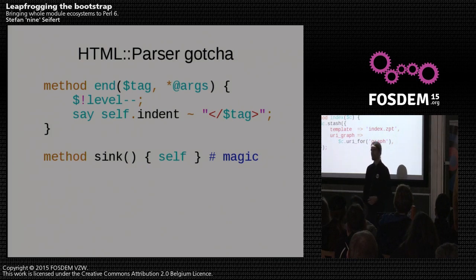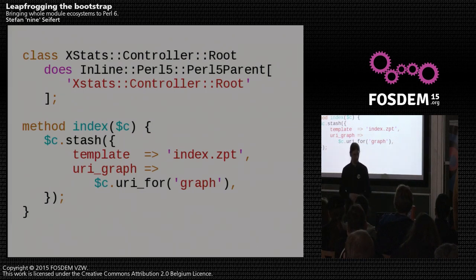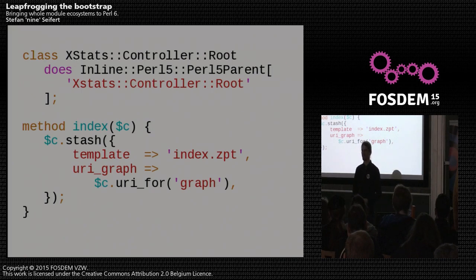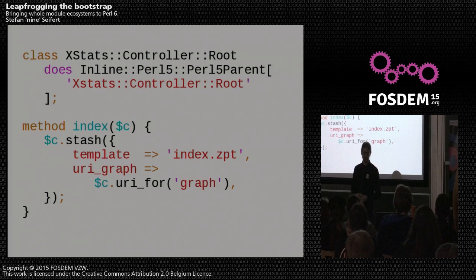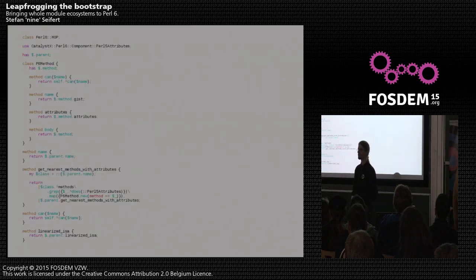But that's not enough, because Catalyst is based on Moose nowadays and uses Class::MOP introspection capabilities to find action methods and information about how to map URLs to actions. This information is contained in subroutine attributes, but Perl 6 does not have subroutine attributes, and Class::MOP can only deal with classes it itself created. So what I did was write a replacement for Class::MOP called Perl6::MOP. Since Perl 6 already supports introspection, all I really had to do was write a few one-liner methods that map the Class::MOP API to the Perl 6 introspection API.